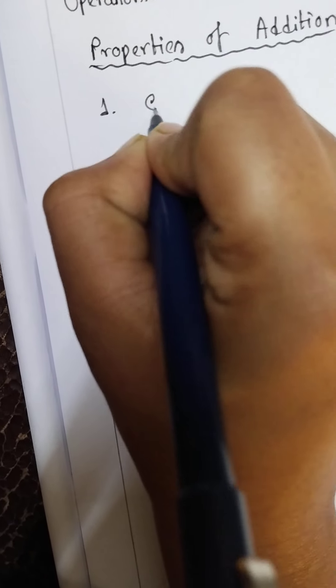Under this heading there are several properties, namely four. The first one is closure property.